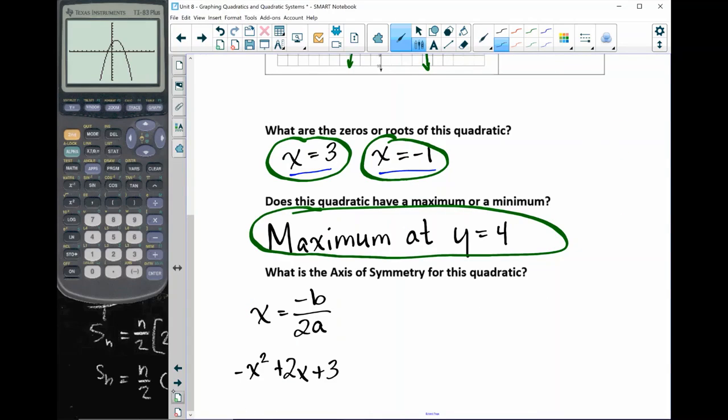Okay, so this tells me that this number would be my a, this number is my b, and this number is my c. You can see that there's an invisible one in front of the negative x squared. Excuse me, the invisible one's in front of the x squared, but it's affected by the negative. So my a is negative 1, as you can see right here.